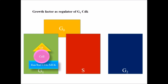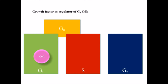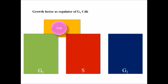Through signaling molecules Ras, Raf, MEK, and ERK, it leads to the synthesis of cyclin D1. Once cyclin D1 is synthesized, cells are able to pass from G1 to S phase. But if growth factors are absent, the cell will enter G0 phase, which is known as the cell arrest phase, and it will remain there until the required conditions are restored.